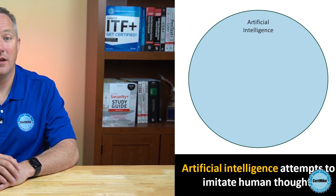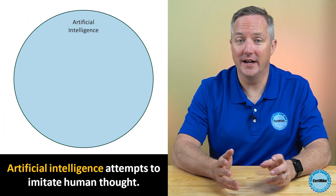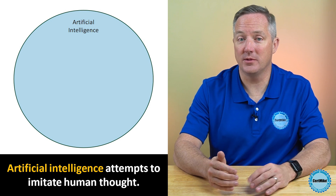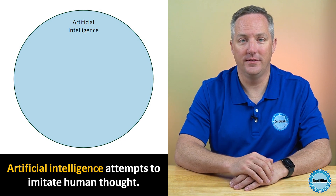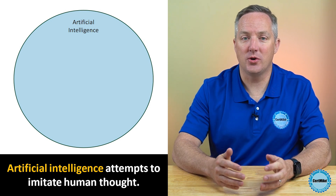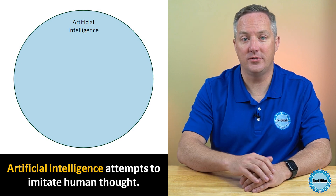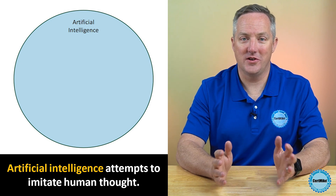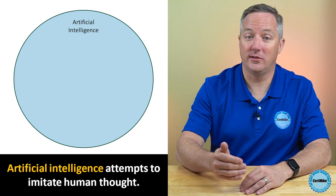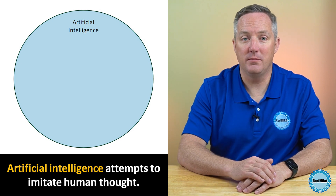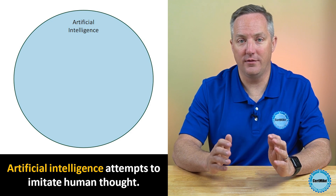As an IT professional, it's important that you have a more precise understanding of these terms. Artificial intelligence, or AI, includes any type of technique where we're attempting to get a computer system to imitate human behavior. We are trying to ask computer systems to artificially behave as if they were intelligent. Of course, it's not possible for a modern computer to function at the level of complex reasoning found in the human mind, but we can try to mimic some portions of human behavior and judgment.